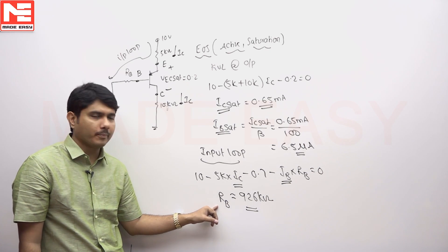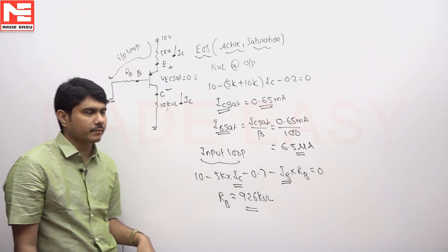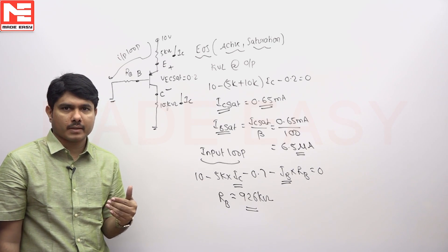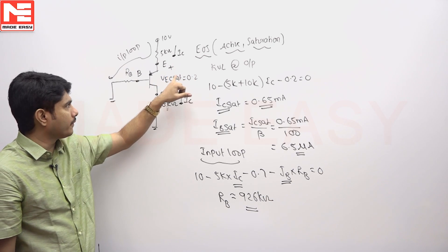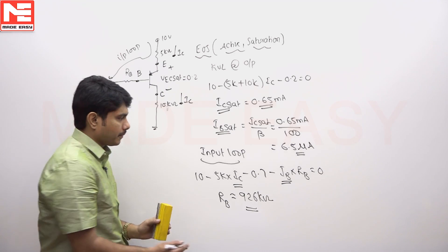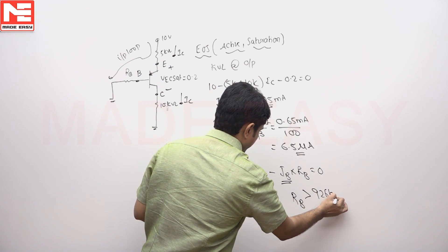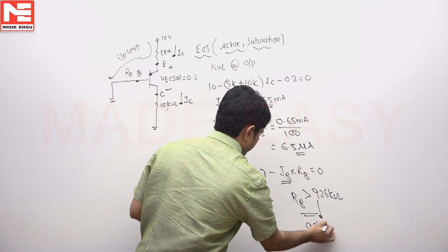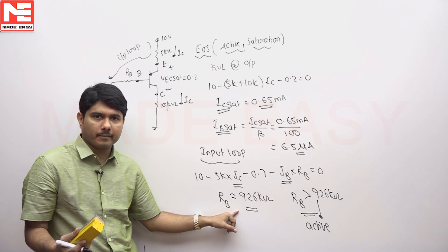With this, this is a boundary condition value. Now the condition should be you are under active region. That means RB if you increase the value, base current will decrease. If base current decreases, IC current will decrease so that the VC cannot come to 0.2. So RB should be greater than 926 kilo ohms. If you are applying this condition, you will be in active region.